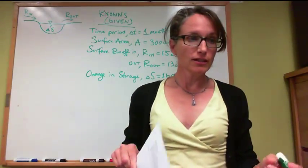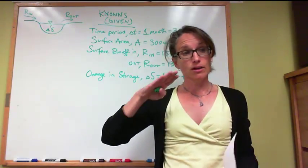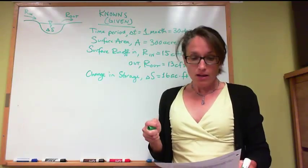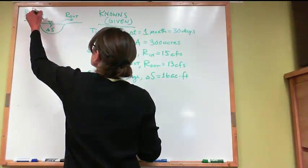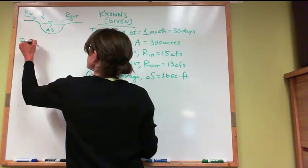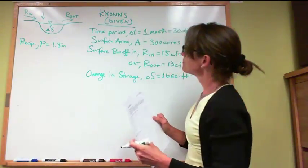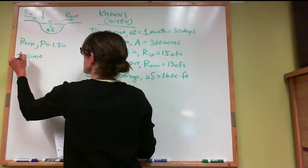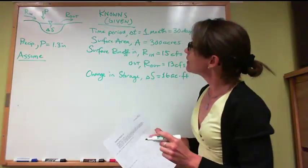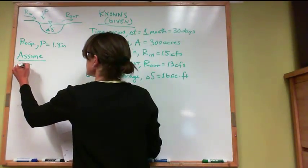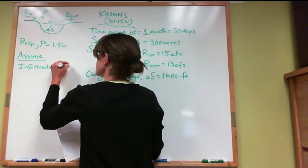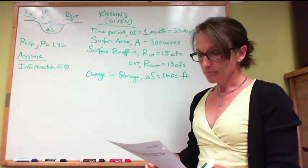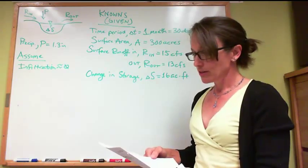An acre foot is an acre of land one foot deep in water — about the size of a football field with end zones, a foot deep. It's a very common unit of measure for large volumes of water in the United States. The USGS gauge recorded 1.3 inches of precipitation, P. We assume infiltration is approximately equal to zero, meaning no seepage or groundwater flow out of the lake. We want to determine evaporation loss in inches over the lake for the month.